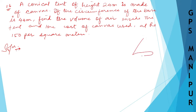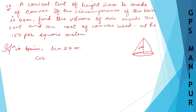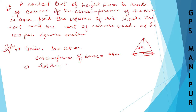There is a conical tent made up like a cone. The height of this tent is 24 meters. It is made up of canvas. The circumference of the base is given as 44 meters. So what is given: h = 24 meters, and circumference of base = 44 meters.